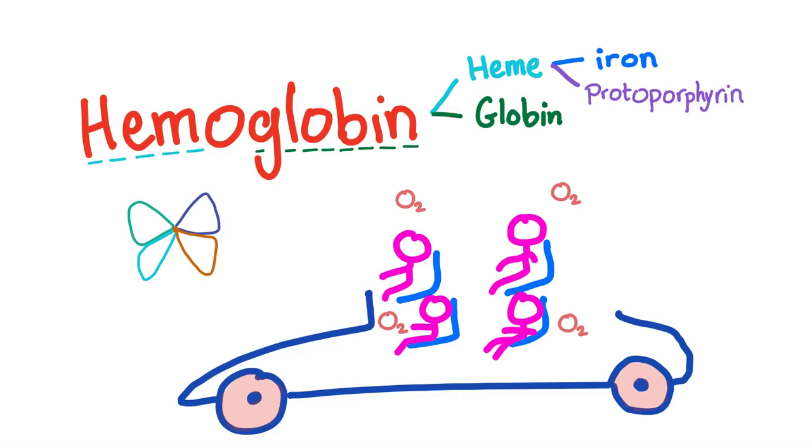The hemoglobin is a structure that has four sites for oxygen. In other words, hemoglobin can carry four oxygen molecules. So each hemoglobin molecule can bind four oxygen molecules.